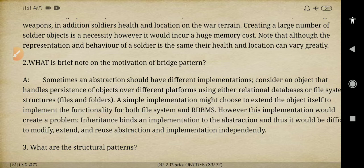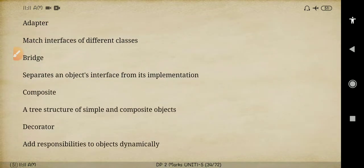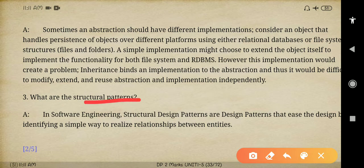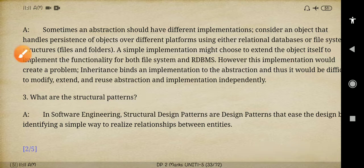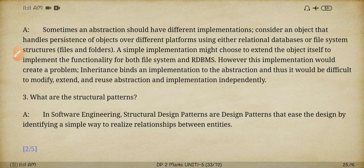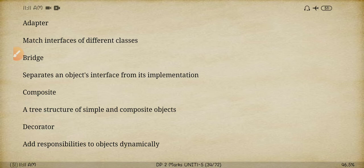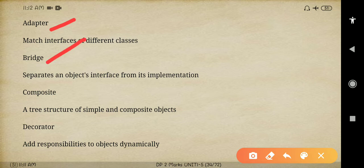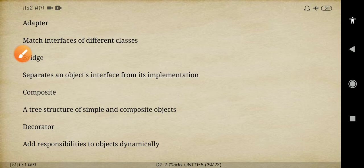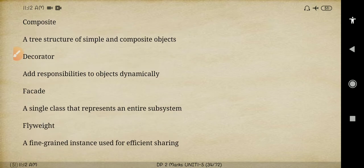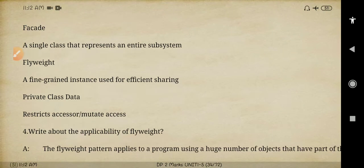Third question: what are structural patterns? We need to explain what is meant by structural patterns and what types are available. Structural patterns are design patterns that identify a simple way to realize relationships between entities. There are a total of seven structural patterns: adapter pattern, bridge pattern, composite pattern, decorator pattern, facade pattern, and flyweight pattern.